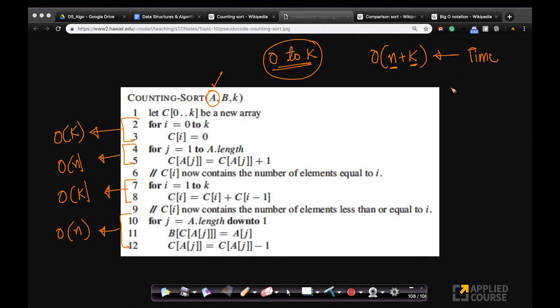Typically, if k itself is order of n, then I can write it as order of n plus n. Then the whole time complexity, look at it this way, if k itself is order of n, this whole thing will become order of n. Very simple.